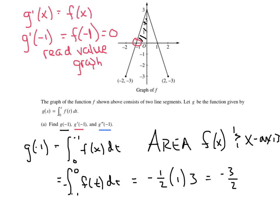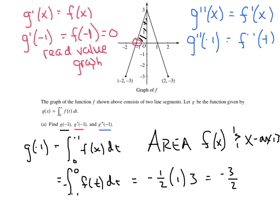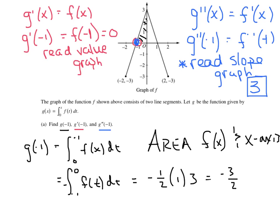Let's do g double prime. g double prime of x is simply f prime of x, so g double prime of negative 1 is really f prime of negative 1. We're not doing area, and we're not going to read the value of the graph — we're going to read the slope of the graph. At negative 1, it looks like a linear function with a rise of 3 and a run of 1, so the answer is 3. As far as scoring goes on the AP exam, we get plus 1 for negative 3 halves, plus 1 for 0, and plus 1 for 3, for a grand total of 3 points.